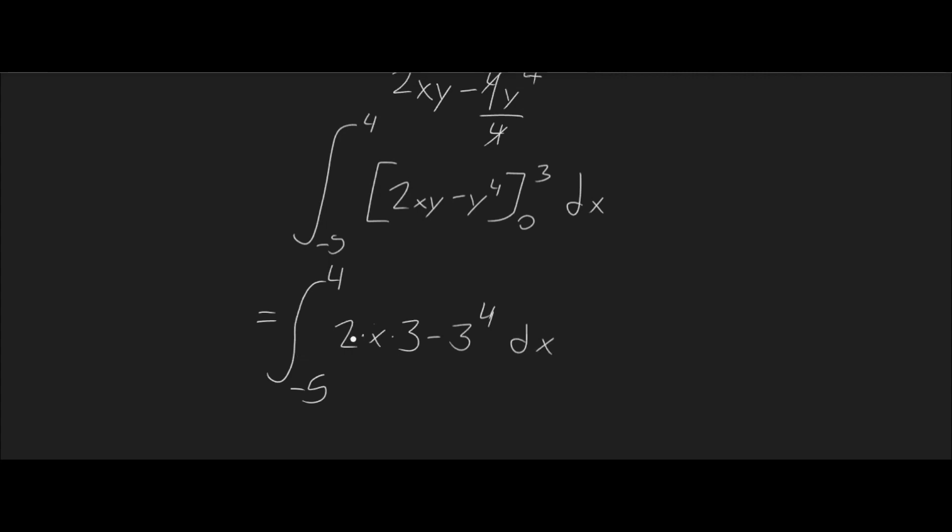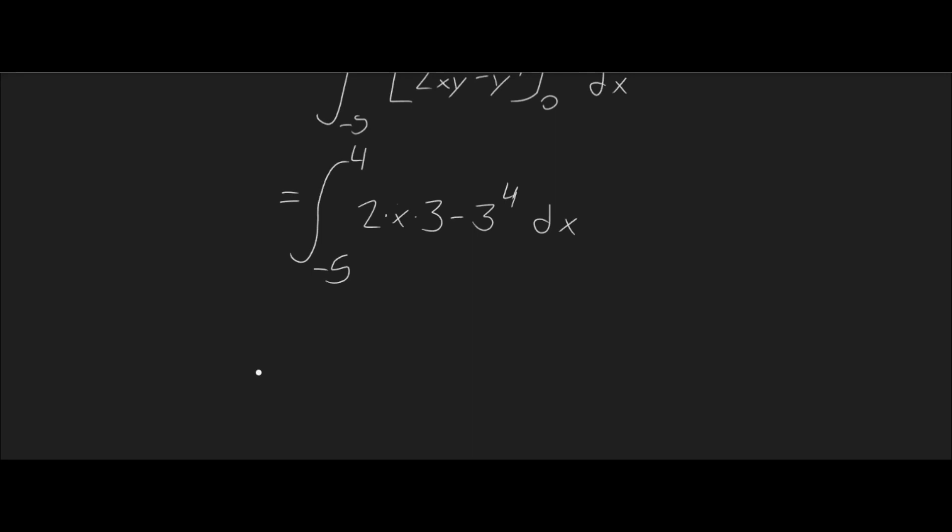And so, now we're left with only x variables. So, the y is gone. And we can integrate this with respect to x. So, we're left with the integral from negative 5 to 4 of 6x minus 3 to the power of 4 is 81. So, 6x minus 81 dx.